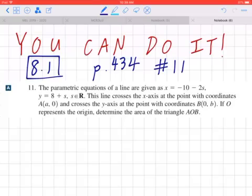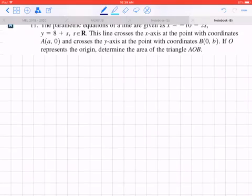This line crosses the x-axis at the point with coordinates A(a, 0) and crosses the y-axis at the point with coordinates B(0, b). If O represents the origin, determine the area of the triangle AOB.